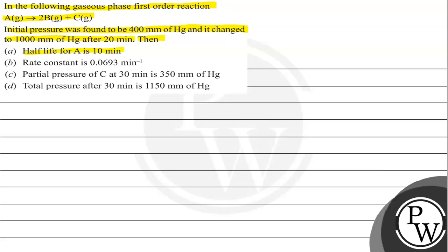Then half life for A is 10 minutes. Rate constant is 0.0693 per minute. Partial pressure of C at 30 minutes is 350 mm of Hg. Total pressure after 30 minutes is 1150 mm of Hg.